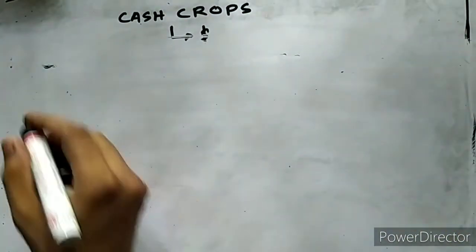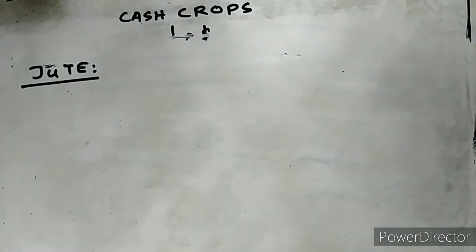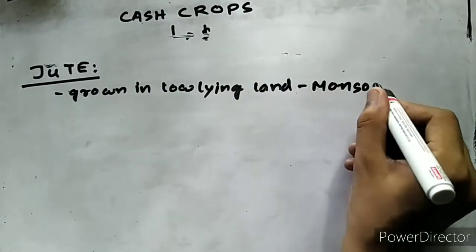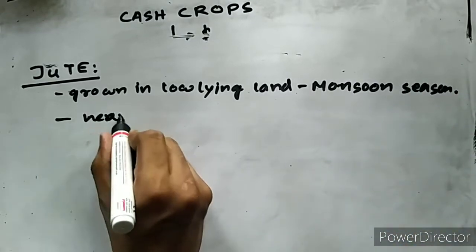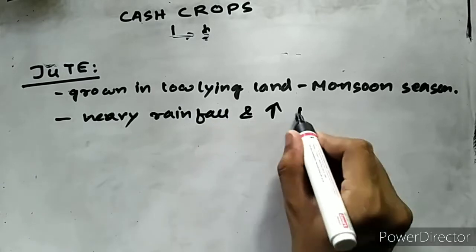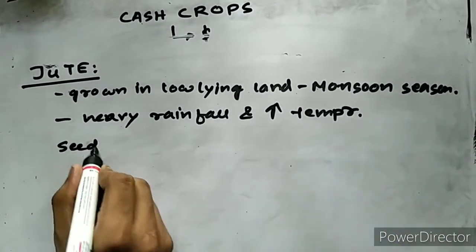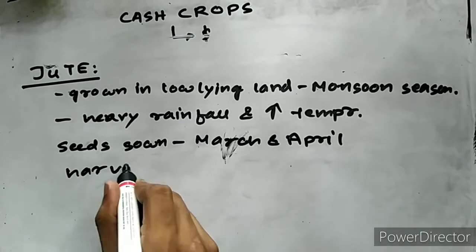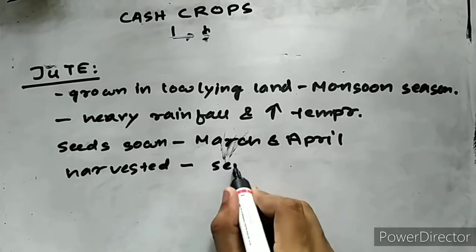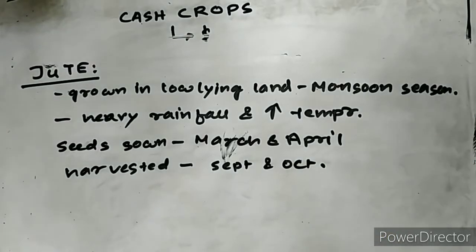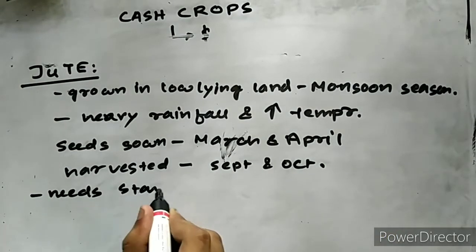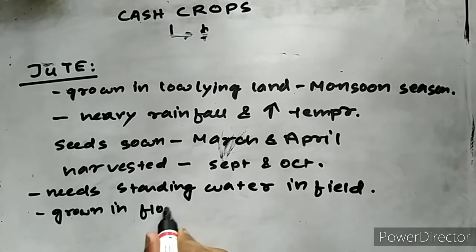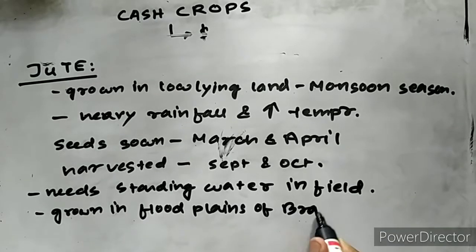Let us first take the most important cash crop in Assam, that is jute. Jute is an important fiber crop grown in the low-lying plains with monsoonal climate. The crop needs heavy rainfall and high temperature. Seeds are sown on low-lying silted areas in March and April. The fiber is extracted after cutting the trunks and wetting them underwater in September and October. The crop needs standing water in the field when seedlings grow to a height of half a meter and above. That is why jute is normally grown in the floodplains of the Brahmaputra and Barak and their large tributaries.